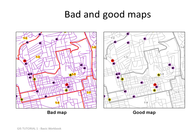Here is an example of a bad map on the left and a better map on the right. The bad map has ground features that take up too much prominence, whereas the streets are made into ground features on the good map on the right. The point of this map is to map out crime, and the good map on the right shows the crime incidents much more clearly.